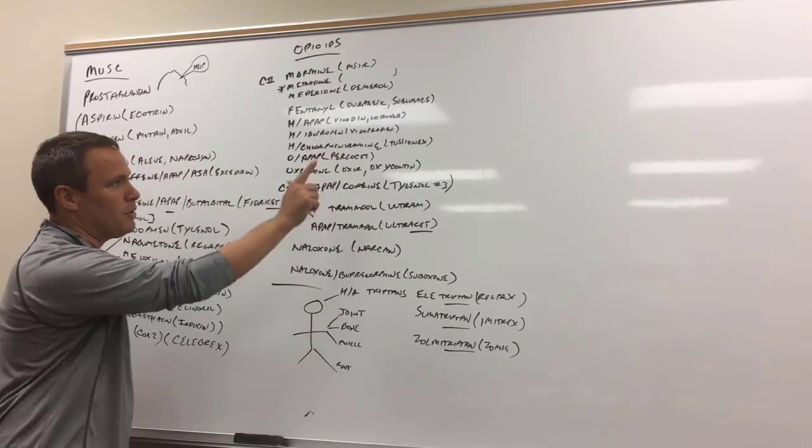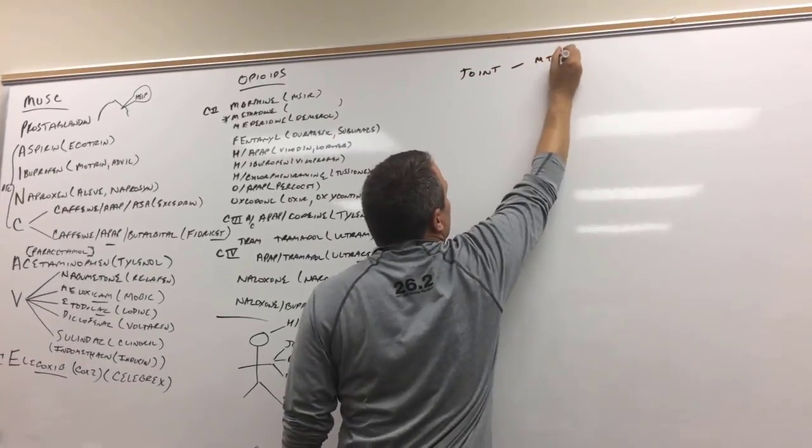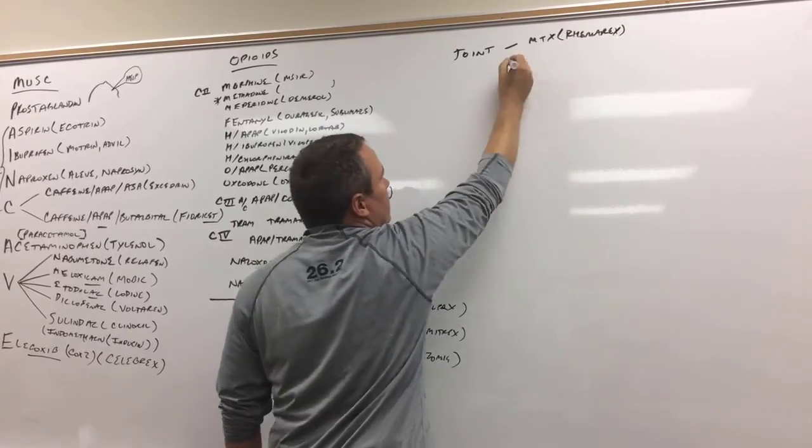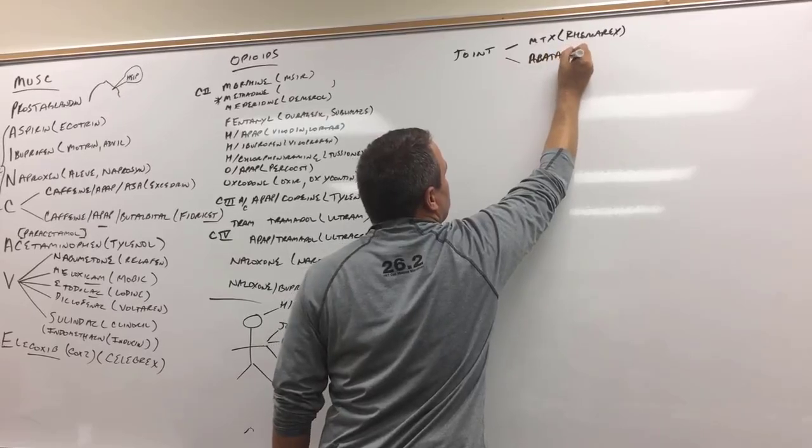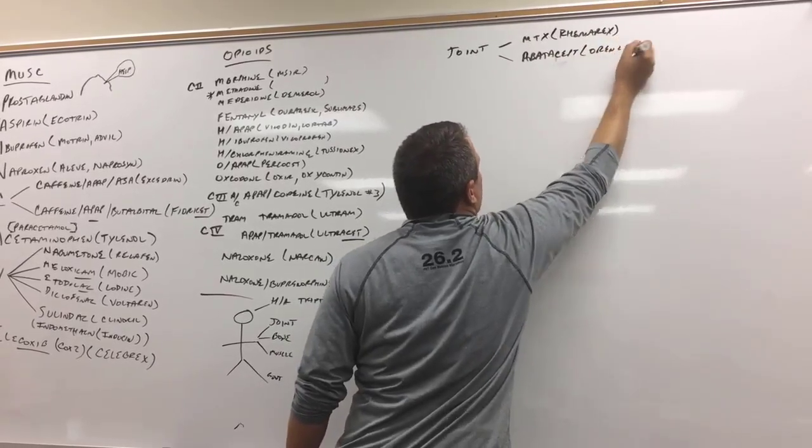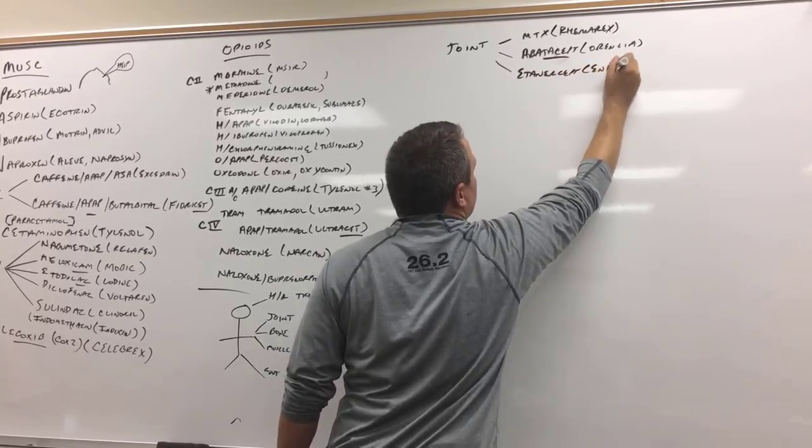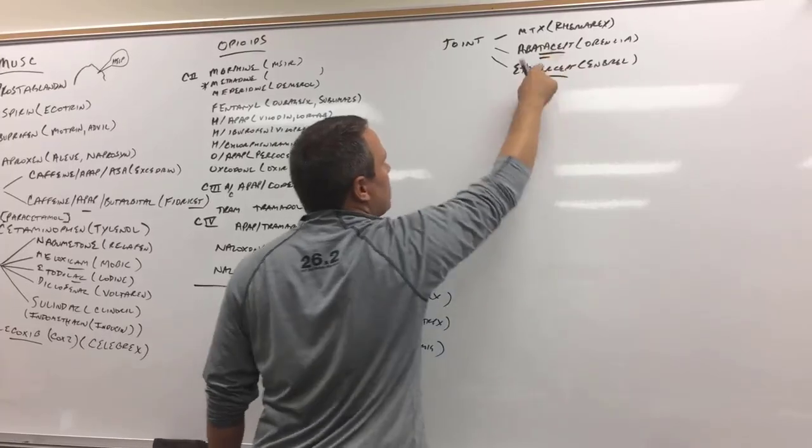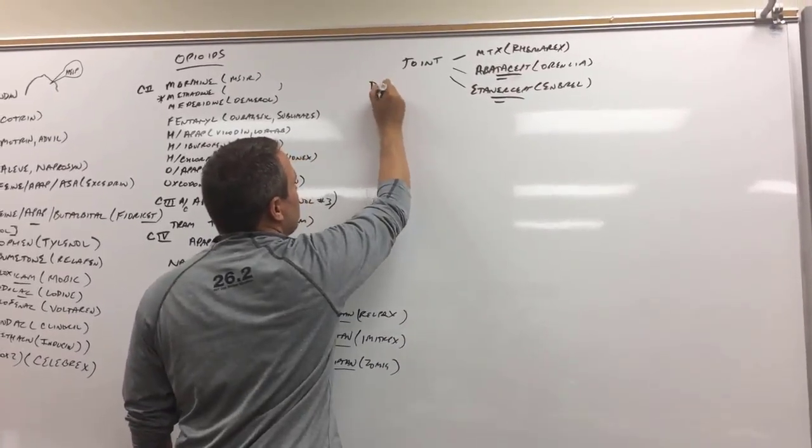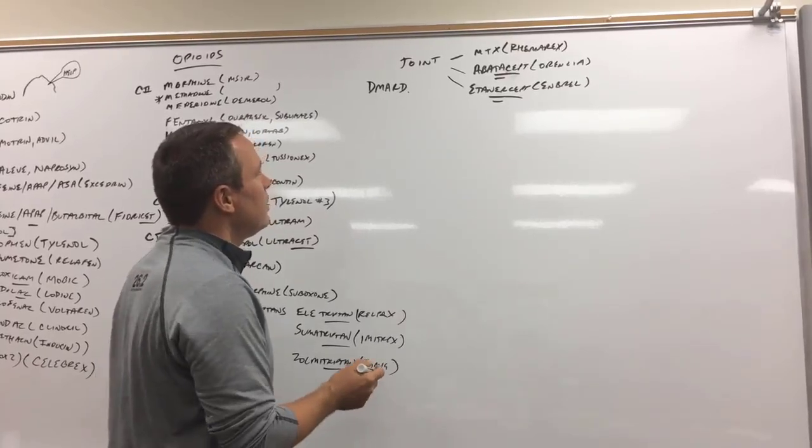We're going to start with head, then go to joint, and I'm only going to put three up here. We'll put methotrexate, which is Rheumatrex. What we're doing is going from the non-biologic to then the biologics, and there's a ton of them. Abatacept, which is Orencia. Then there's etanercept, which is Enbrel. That substem differentiates it. These are both biologics, and we're thinking about DMARD, disease-modifying anti-rheumatic drugs. We're trying to prevent the joints from fusing and doing terrible things.